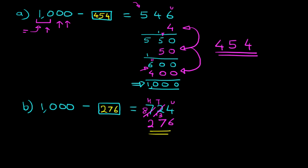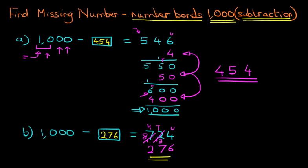276. So 1000 minus 276 equals 724. The missing number was 276.